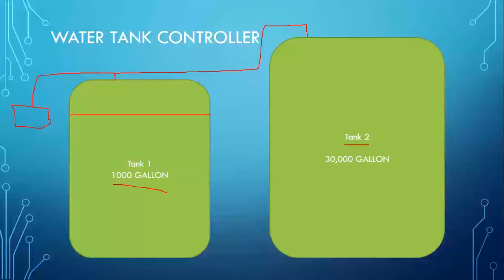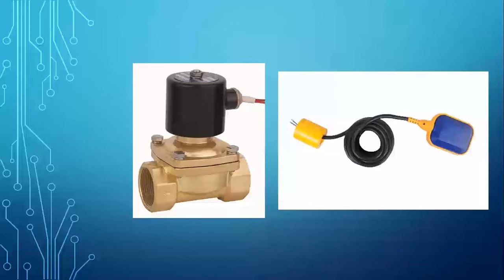When the small tank is full, we will stop the water supply to it so water keeps going to the larger tank. We need a solenoid valve (SOV) — electronically operated. It comes in two types: normally open and normally closed, just like electronic contacts but mechanical. Normally open means water flows through freely; normally closed means water does not flow unless you apply power to the solenoid.